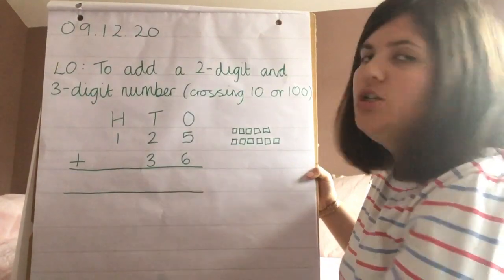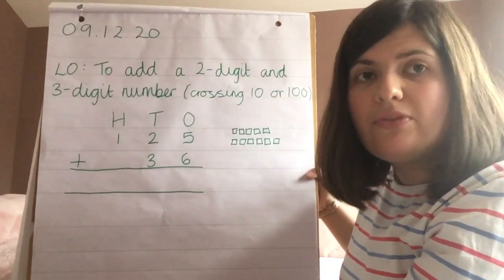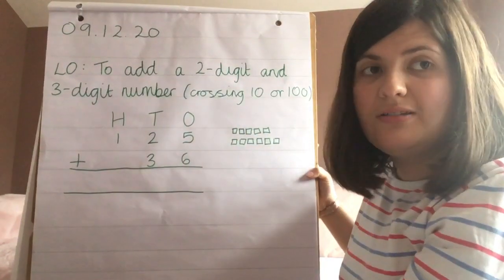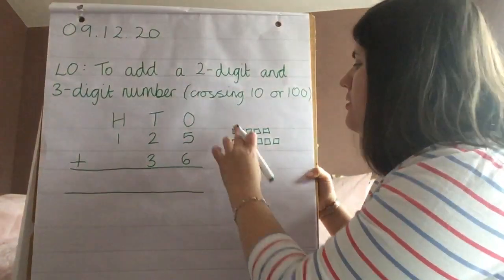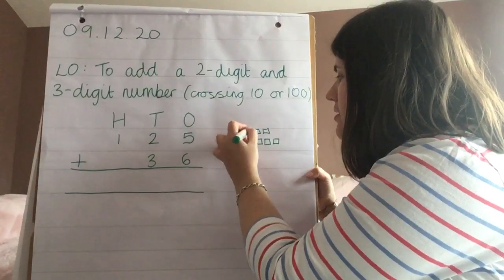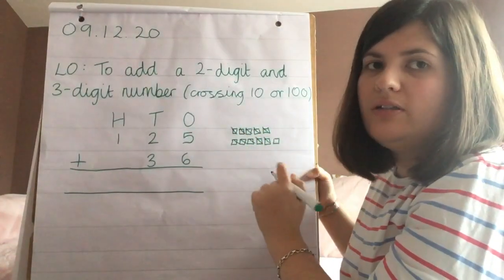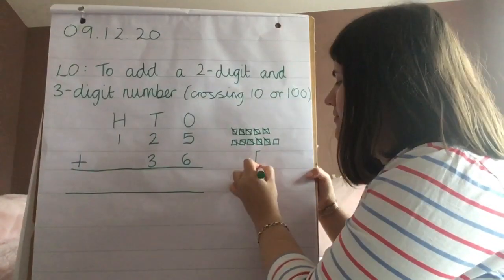That's too many to write in our ones column, so what do we have to do? We have to exchange. We're exchanging ten ones for one ten. So I'm going to exchange one, two, three, four, five, six, seven, eight, nine, ten. So there's ten ones and I'm exchanging them for one ten.